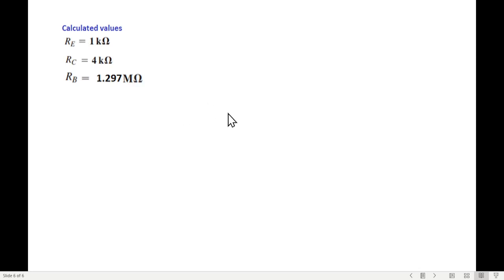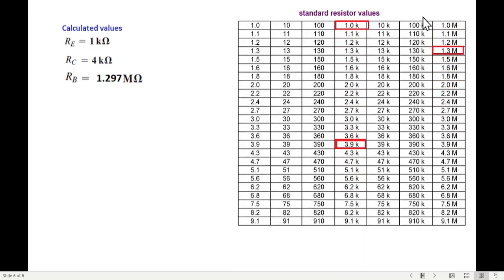We have to see from the standard resistor chart. When you Google for resistor standard resistor chart, then we see this chart. Now we verify that RE 1 kilo is available in the market, whether it's a standard value or not. Here you can see it is available 1.0.